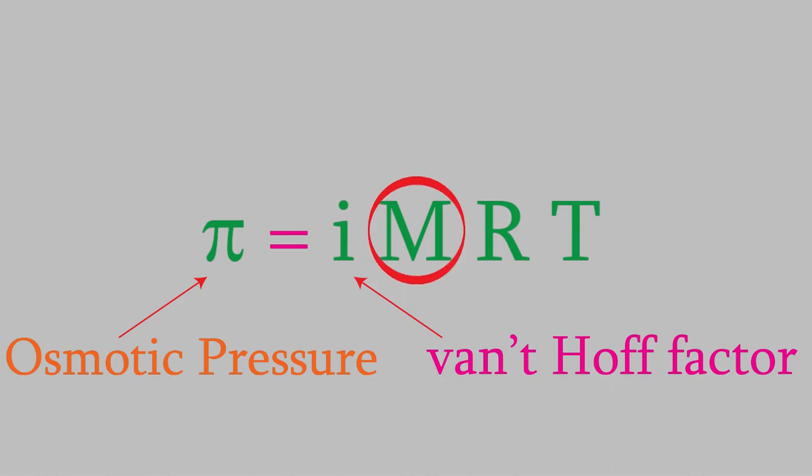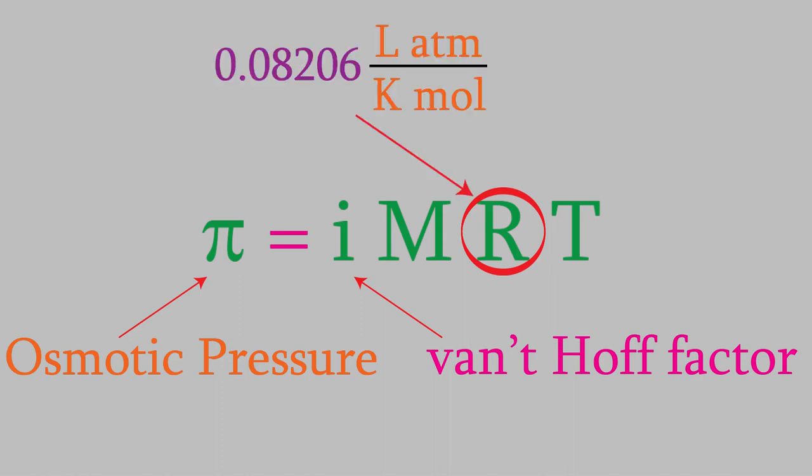i is the van't Hoff factor, which you learned about from the previous video. M is the molarity. R is the gas law constant, which you learned about in General Chemistry 1. In case you've forgotten, it's equal to 0.08206 liters atmospheres over Kelvins moles. Finally, T is the temperature. Notice that because the units for R includes Kelvins, that's the unit we need to use for the temperature. If you use Celsius instead, the units won't work out, and you'll get an incorrect result in your calculation.